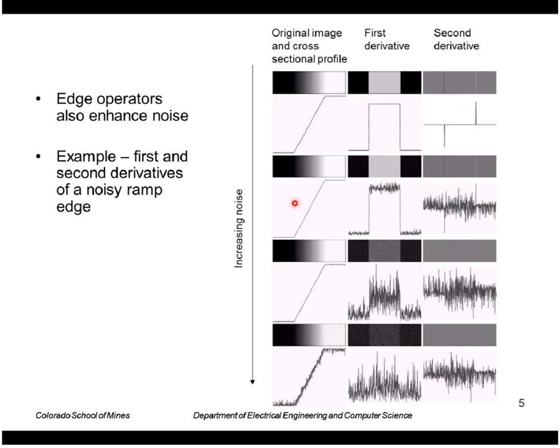As we go down the rows here, we increase a little bit of noise. We add a little bit of noise to the image. The noise is almost imperceptible here and here. It's visible a little bit here.